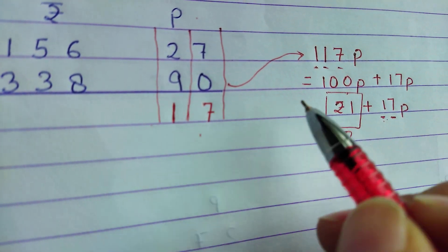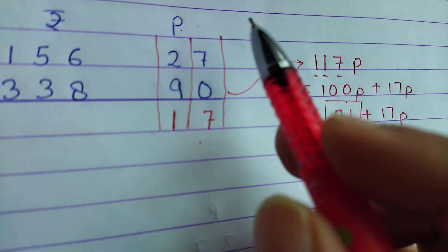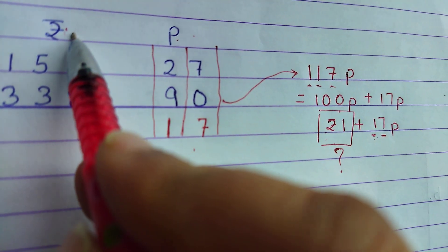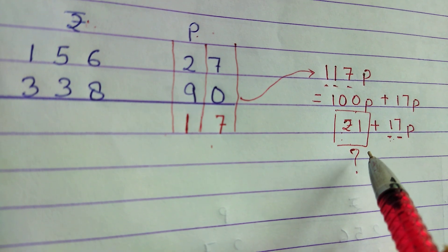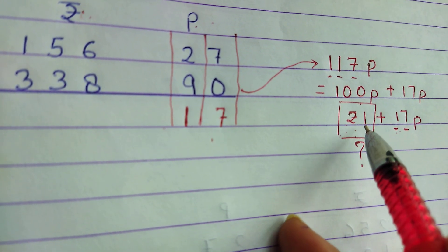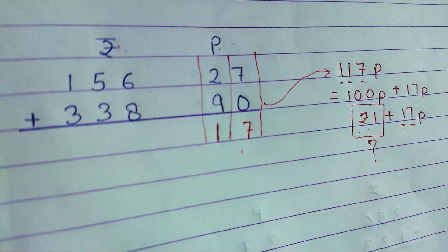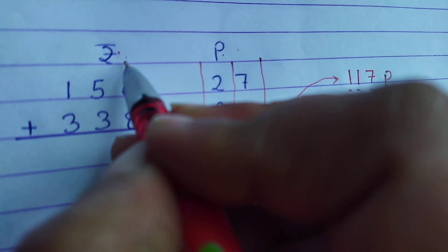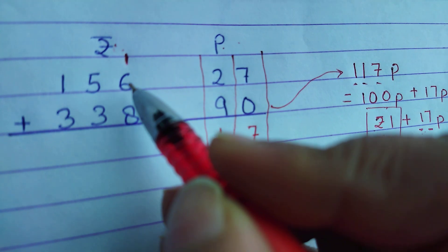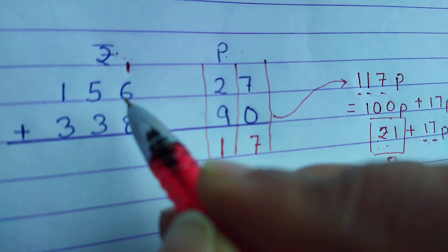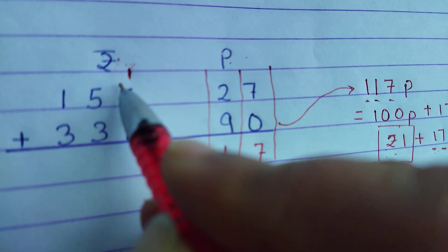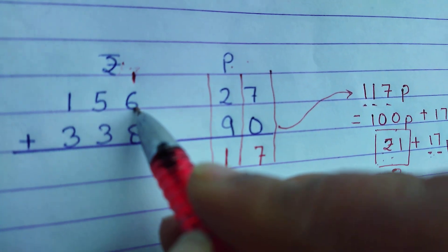Paise says: you are a rupee, you cannot live in my house! So this 1 rupee will go and join the rupees column. Now we add 1 (carried over), 6, and 8 in the units of rupees. We are adding 1 rupee carried, plus 156 rupees, plus 338 rupees.